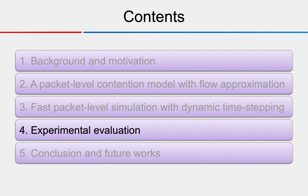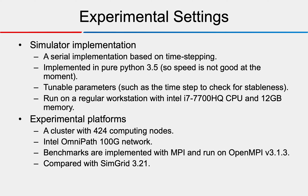For experimental results, the simulator is a serial implementation based on time stepping, implemented in pure Python, so its speed is not optimal at this stage. It has several tuning parameters such as the time step interval for stability checking. The simulator runs on a regular workstation with an Intel CPU and 12 gigabytes of memory. For real experimentation we use a cluster of over 400 compute nodes connected by an OmniPath 100-gigabit network. Benchmarks are implemented in MPI running on OpenMPI 3.1, and we compare results with SimGrid 3.21.